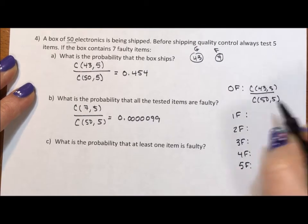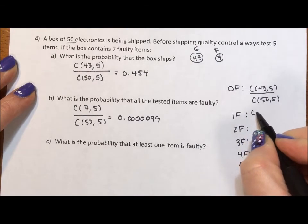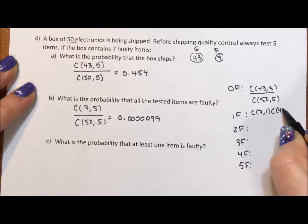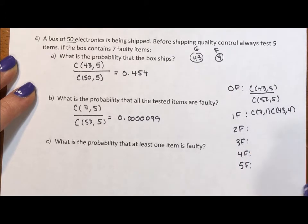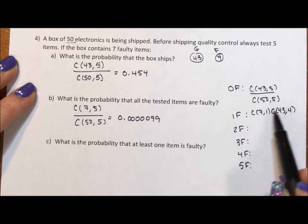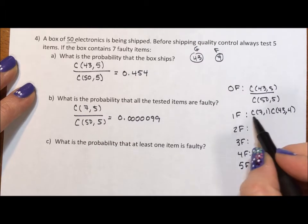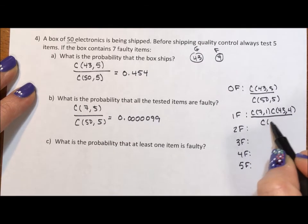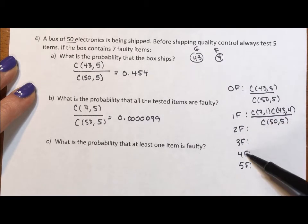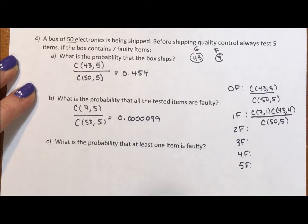These calculations are more interesting. 1 faulty would be the combination of the 7 faulty taken one at a time times the combination of the 43 good taken 4 at a time. Because we have to make sure that we multiply until we get all 5 items represented. Then we of course divide by the combination of 50 taken 5 at a time. For 2, this becomes 2 and 3. 3 and 2. 4 and 1. And then we get our last one.